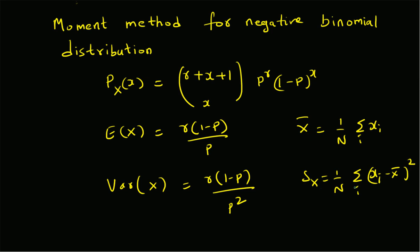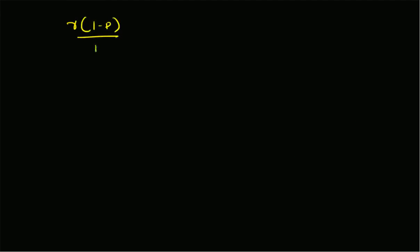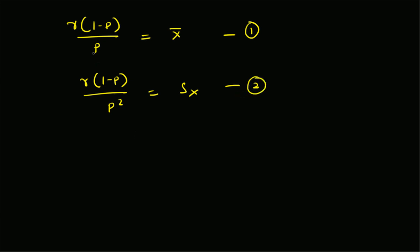By equating these results we can estimate the parameters r and p. From the first equation, r times (1 minus p) equals the sample mean — call this equation one. Then r times (1 minus p) divided by p squared equals the sample variance — equation two. By substituting the expression r times (1 minus p) from equation one with x-bar in equation two, we get x-bar divided by p equals the sample variance.